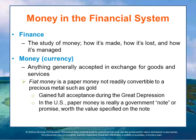While paper money was first used in North America in 1685 and even earlier in Europe, the concept of fiat money — paper money that is not readily converted to precious metals such as gold, but is rather a statement by a governing body that this debt will be paid — did not gain full acceptance until the Great Depression in the 1930s. In the United States, paper money is really a government note, a promise worth the value specified on the note.